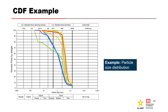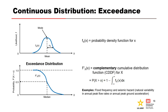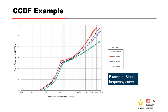An example of a CDF or non-exceedance distribution is a gradation curve, where particle size is plotted against the percent finer by weight. For the same PDF, an exceedance distribution or complementary cumulative probability distribution function can be developed — its equation is 1 minus the CDF. Flood and seismic hazard curves are both examples of an exceedance distribution. The stage frequency curve, when rotated clockwise, matches the shape of the complementary CDF.